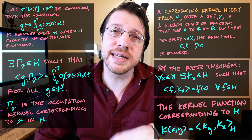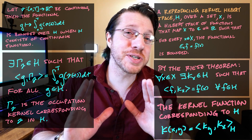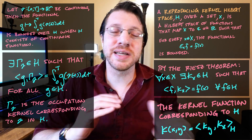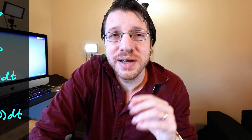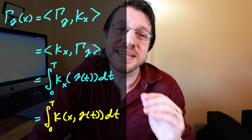We can use these two ideas to get a nice representation of occupation kernels. Working over the reals and ignoring conjugation, if we want to evaluate our occupation kernel at x, that is the same as taking the inner product of our occupation kernel with a kernel function centered at x. Swapping that inner product around, we see that it is the same as composing our trajectory into k_x and then integrating from 0 to T. That gives a clean representation of our occupation kernel with respect to the kernel function itself.